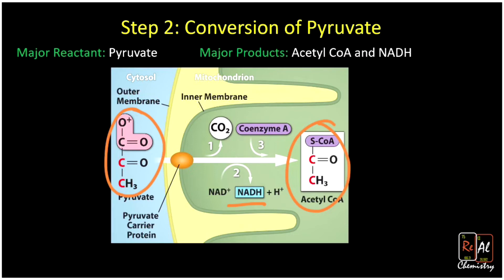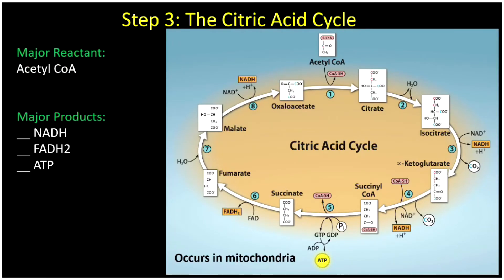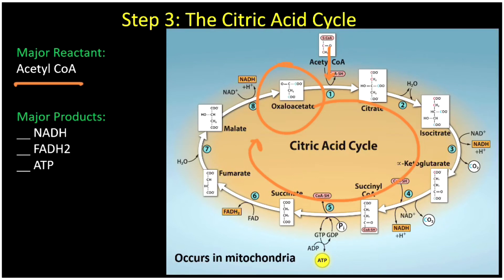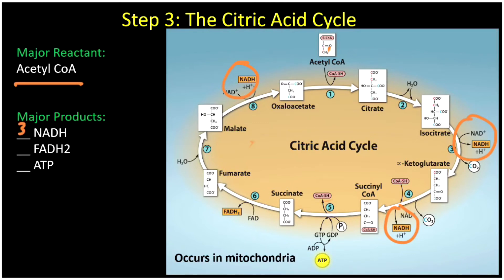Now that we have acetyl-CoA, we can go into the next and frankly most complicated step of the metabolism process. We plug acetyl-CoA into what's called the citric acid cycle. It's called a cycle because we start with the molecule oxaloacetate, and when we get all the way around we get back out oxaloacetate, repeating over and over again. Every time we load an acetyl-CoA into this cycle, we get out three NADH, one FADH, and one ATP. FADH is just like NADH—another energy-carrying molecule. So now we've produced even more energy-carrying molecules.